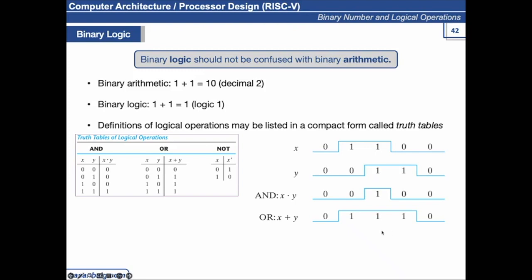And for the NOT, for example, NOT x, it will exactly be a replica of x. Because x was zero here, the output would be one. X was one, one here, the output would be zero, and so on. Any question?